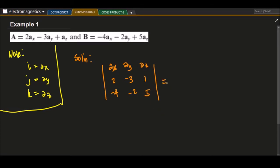We use the determinant method. For a sub x, we have the vector negative 3, negative 2, 1, and 5.